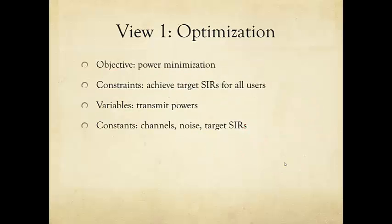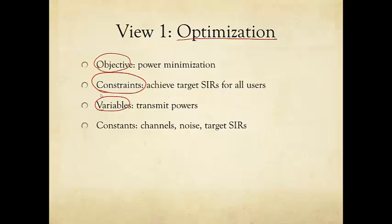Let's start with optimization theory — a word we use in daily language. We try to optimize our time, our holiday schedule, our work schedule. In an optimization problem, you have degrees of freedom called optimization variables, some objectives you want to maximize or minimize, and constraints. Without constraints, the problem would be too good to be true. Constraints could be on the time, money, or energy you have.